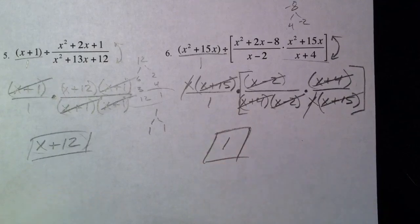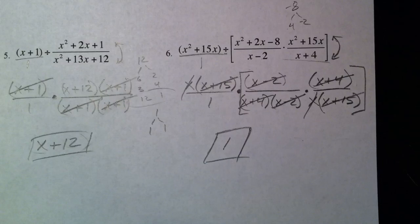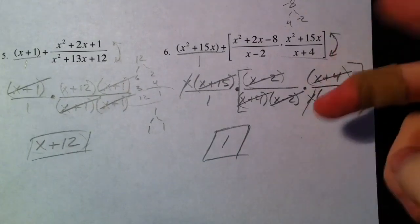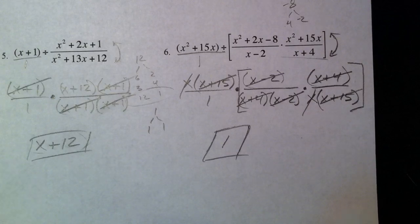All right, so that's multiplying and dividing rational expressions. Biggest deal: factor, factor, factor, factor, factor, factor. Can't say it enough. Don't cross out anything until you have it all factored, and then when you divide, flip over your fraction and treat it just like the multiplication, and then start cross-canceling after you factored. That's the fun part.